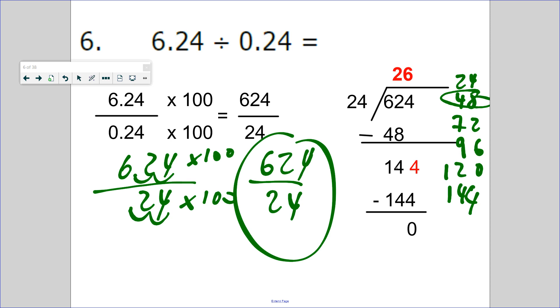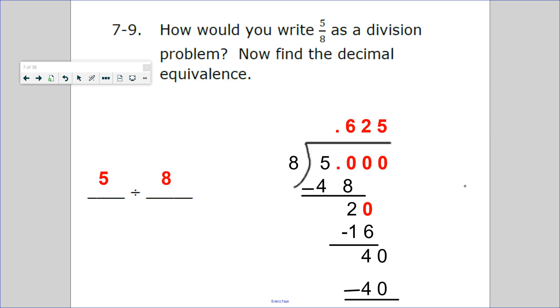Can 24 go into 62? Two times, which is 48. Bring down the 4. It goes in six times. That's why the answer is 26. Number seven: how would you write this fraction as a division problem? 5 divided by 8.